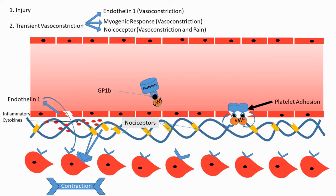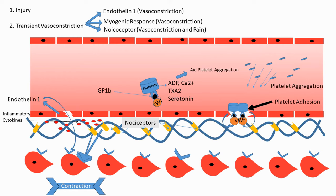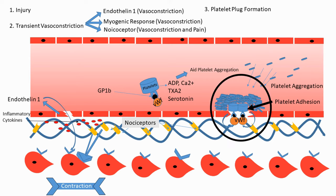After platelet adhesion, platelets get activated and release certain substances: ADP, calcium, thromboxane A2, and serotonin. Once ADP is released, it causes more platelets roaming in the blood vessel to come towards the site of injury, promoting platelet aggregation. As more and more platelets arrive and bind onto each other, they fill the injured space, ultimately stopping the bleeding and forming the platelet plug.